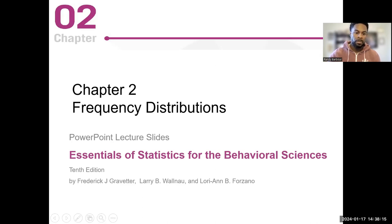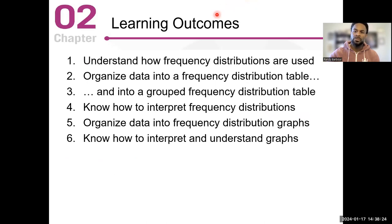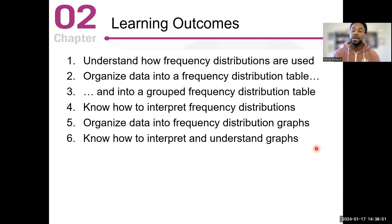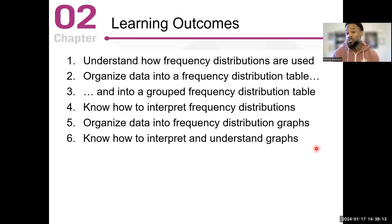So let's get started. Here are some of the learning outcomes you should be familiar with. By the end of the lecture, you should have a general understanding of these things. Organizing a frequency distribution table — we'll have some practice problems at the end of the lecture that you'll be required to complete. The last one says know how to interpret and understand graphs. That's a very big skill, so you're thinking about looking at a pure research paper. Usually they're going to have graphs and tables, and as a researcher you have to be able to read the graph, read the table, and understand and interpret what's going on.